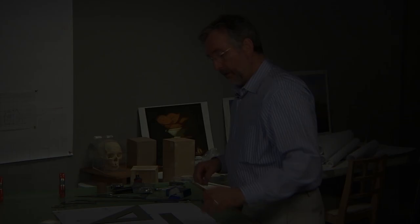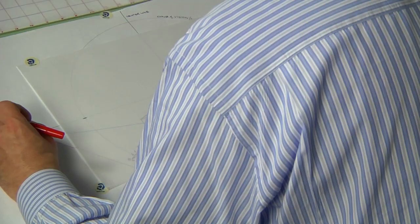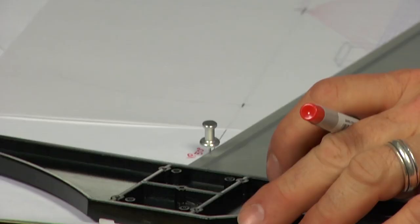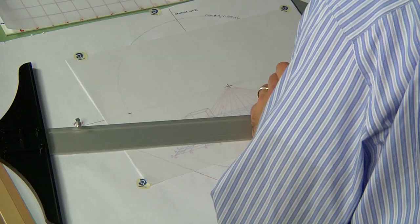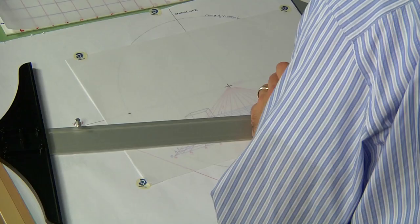I have my vanishing point. It's no longer the point of sight. I'm going to place a pushpin in. Take my straight edge. Place my stylus first. Move it up. Make sure it's against the edge.